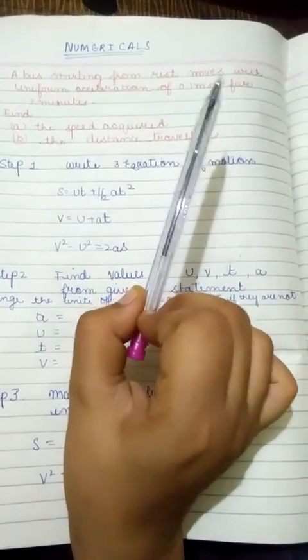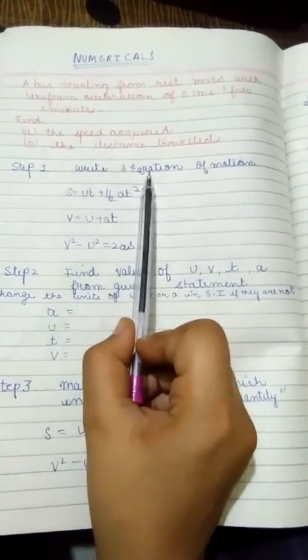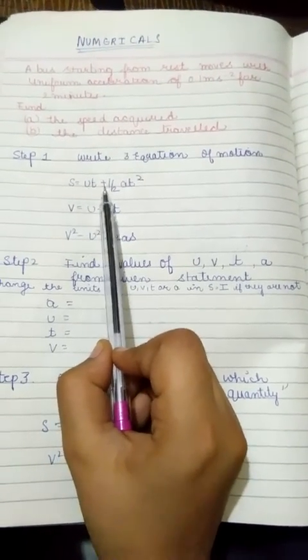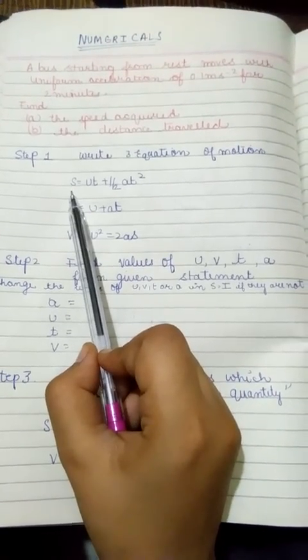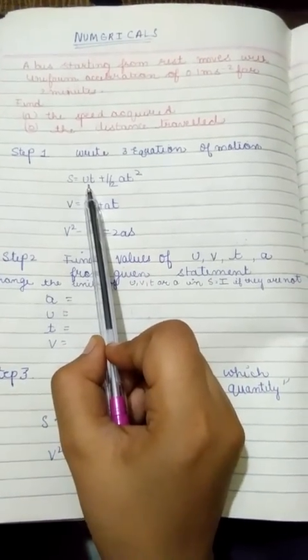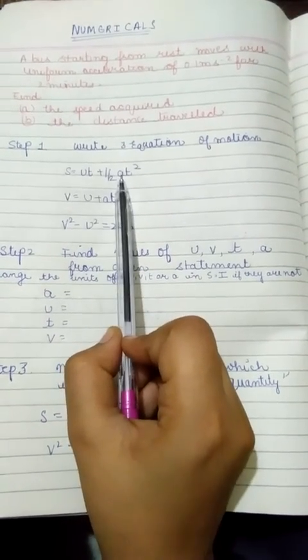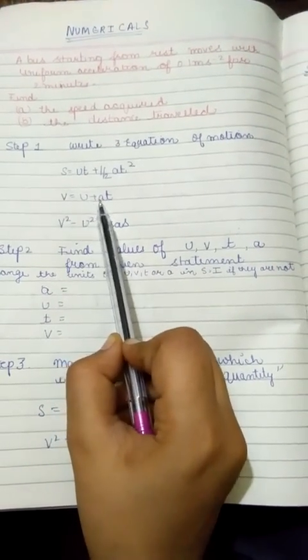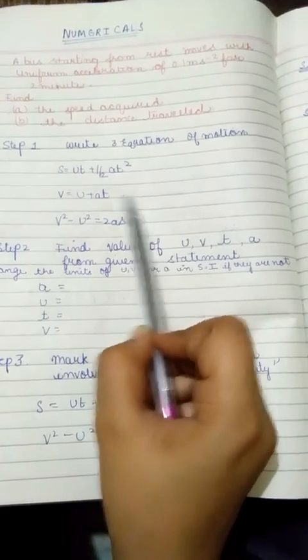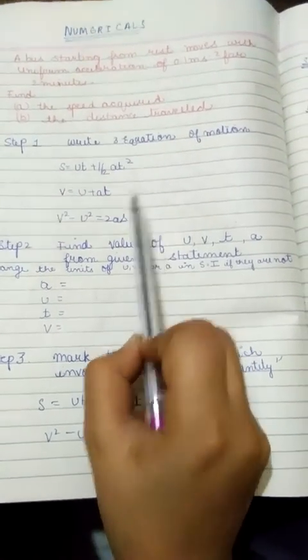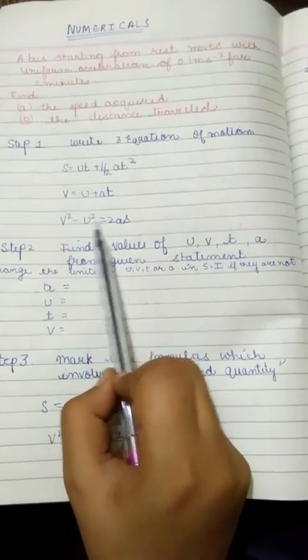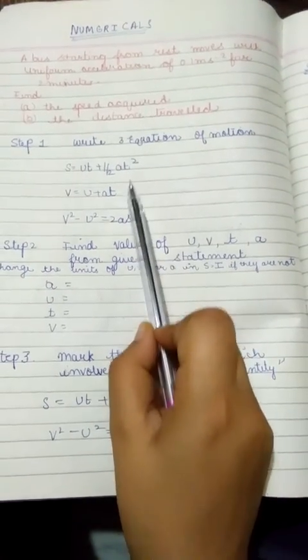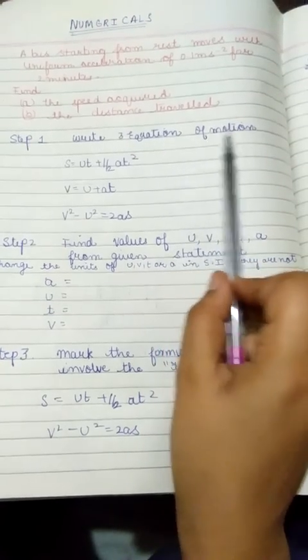So step 1, write 3 equations of motion. Which are s is equal to ut plus half at square. Where s means distance, u means initial velocity, t means time taken, a means acceleration. Second is v is equal to u plus at. Where u means initial velocity, v means final velocity. Third is v square minus u square is equal to 2as.